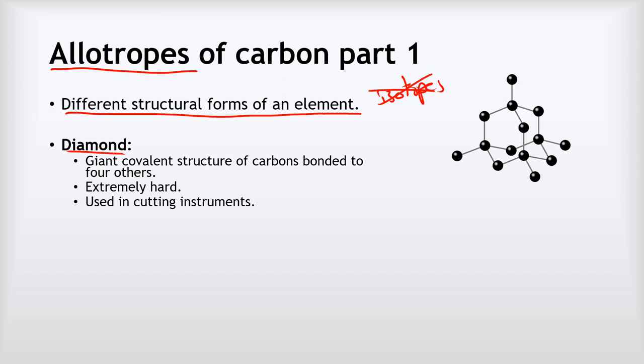So our first one we're going to talk about is diamond. Now diamond is made of carbon and it has this giant covalent structure where every carbon atom is bonded to four others. We can see that here. That carbon is bonded to four others, that one is bonded to four, that one's bonded to four. In fact, they all are, and this pattern just repeats on and on and on.